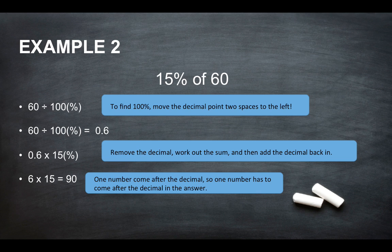One number came after the decimal, so one number has to come after the decimal in the answer. So 90, add the decimal point in will give you the answer of 9. So 15% of 60 is 9.